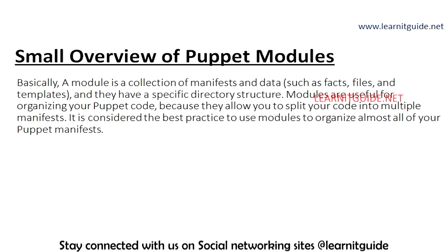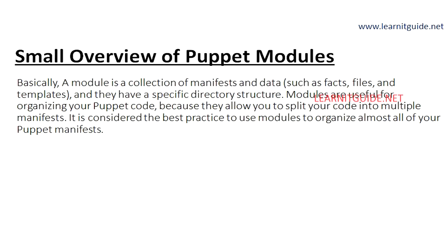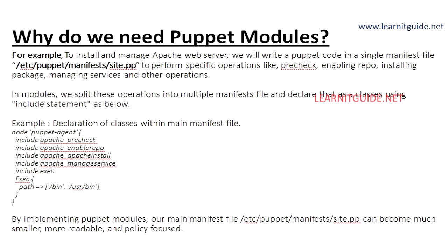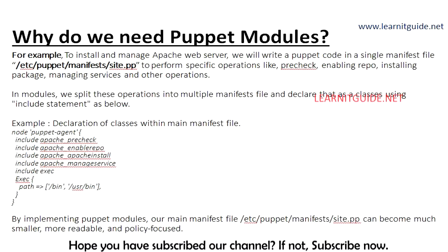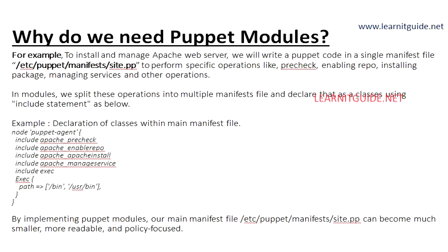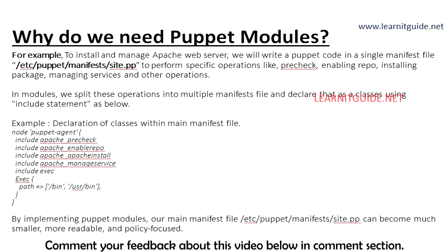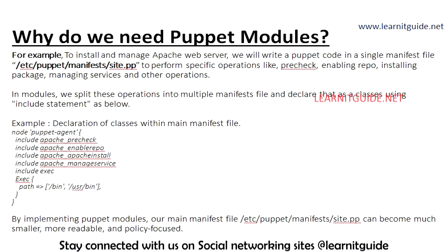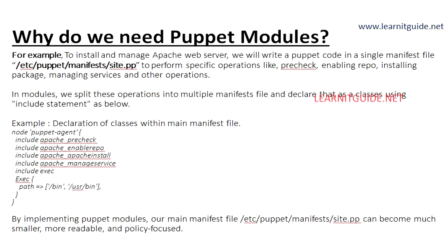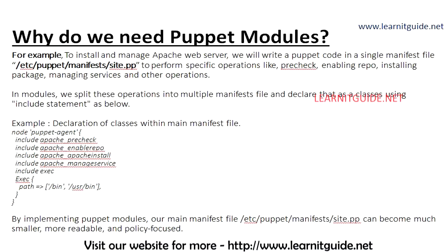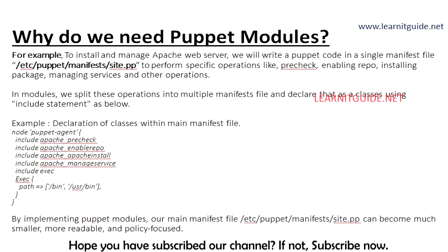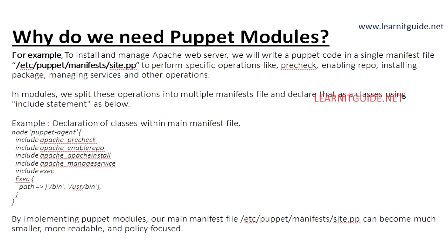If you understand the need of Puppet manifests discussed in the previous videos, it would be easy to understand Puppet modules. For example, to install and manage an Apache web server, we write Puppet code in a single manifest file with the extension .pp to perform specific operations like pre-check, enabling the repo, installing the Apache packages, managing services, and other operations like rebooting or editing the configuration file. All these operations are mentioned in a single manifest file.